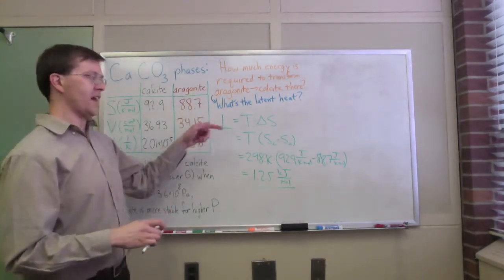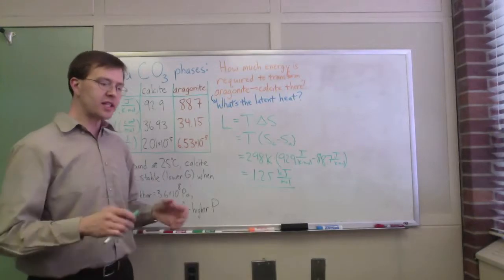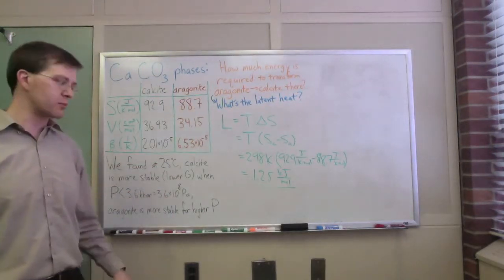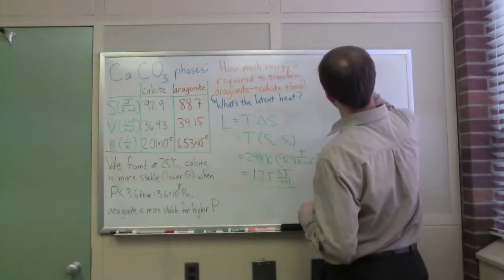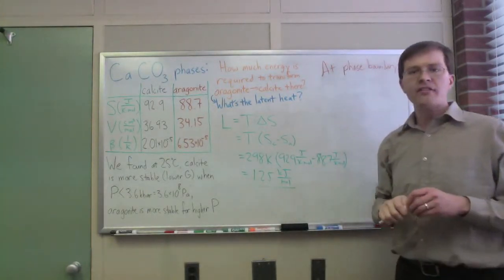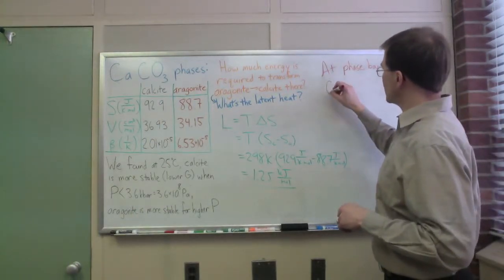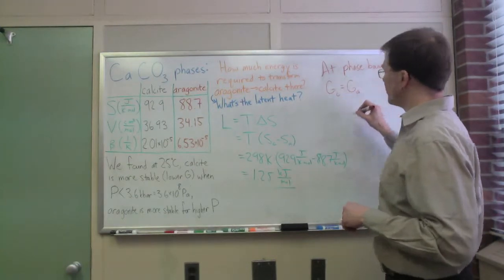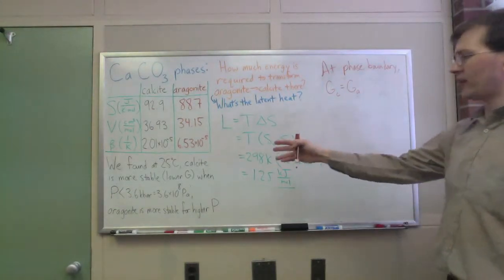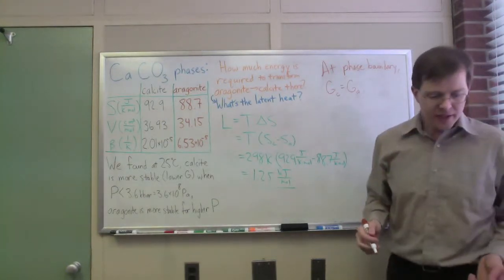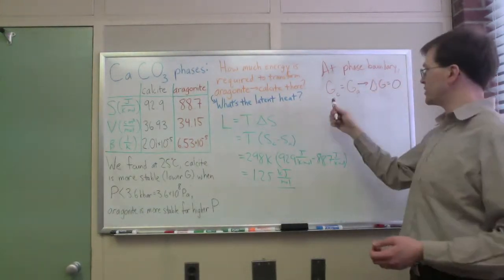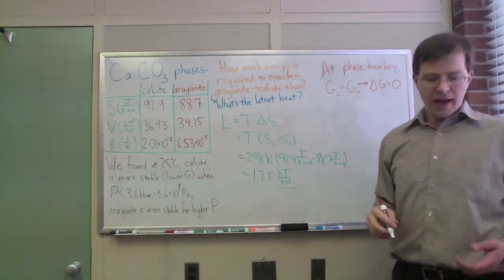Those of you who actually care about the subject and want to know why this is what latent heat is, let's engage with this more. Let's talk about where this came from. If we're at this transition point, at that phase boundary, the whole point is that the Gibbs free energy of calcite equals the Gibbs free energy of aragonite per mole. The Gibbs free energies are equal—that's how we defined where the phase transformation point was. That means delta G equals zero at that point.